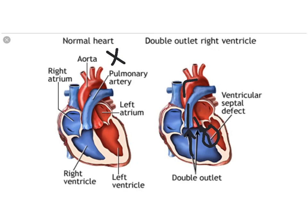They're showing what would be considered a muscular VSD in this picture. A lot of times it's more membranous and it goes down quite a ways. In that case you can sometimes see an ASD that starts near the base of the heart, and it would be considered kind of an AV canal with double outlet right ventricle. A lot of these things can be associated with other defects.